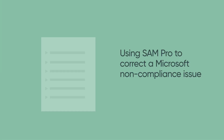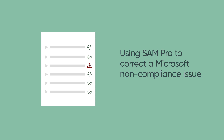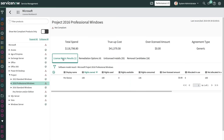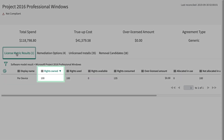Now let's look at an example to see how you can use SAM Pro to correct a non-compliance issue for Microsoft Projects 2016 Professional Windows. Here we see that 100 rights have been purchased, yet there are 135 rights being consumed, which means 35 licenses need to be purchased to get back into compliance.